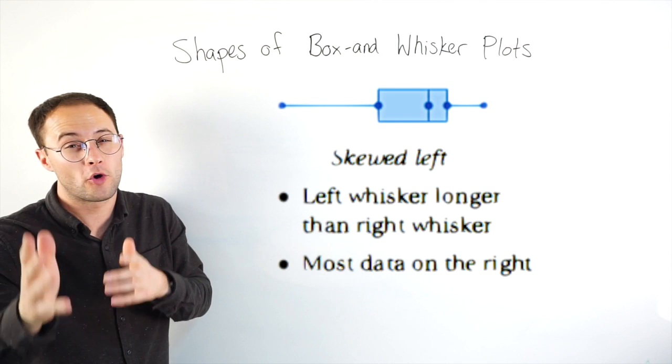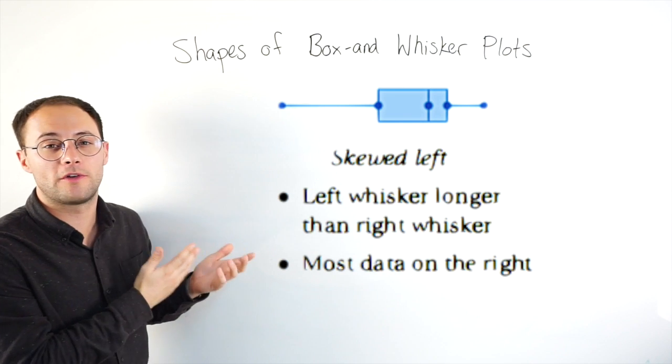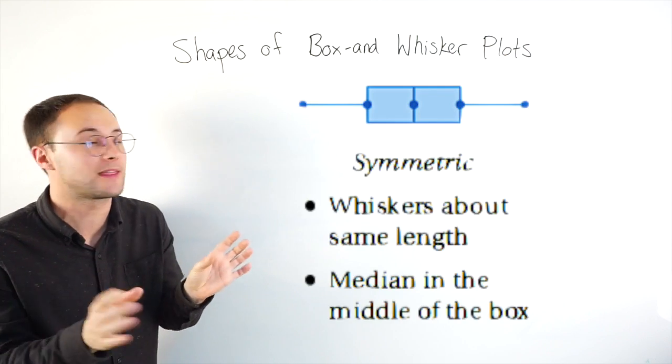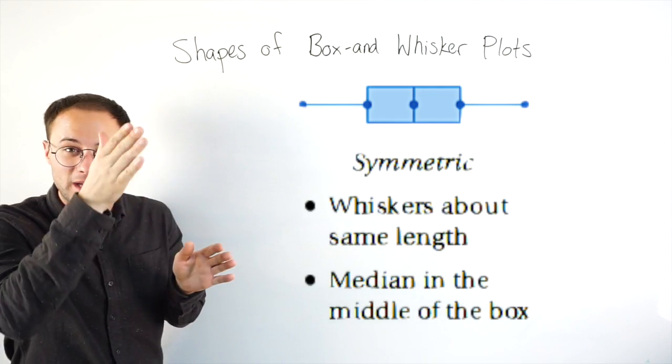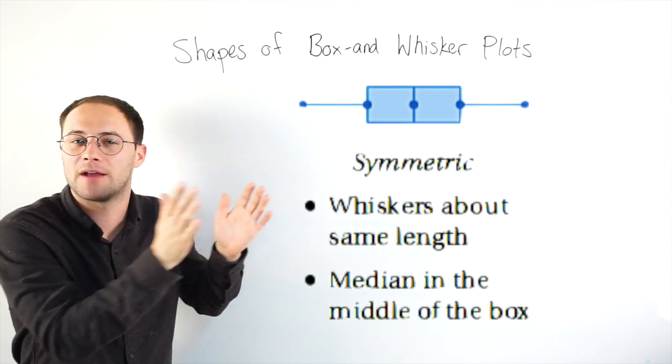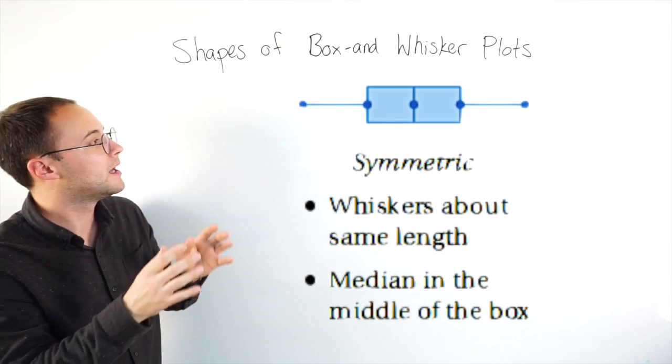It's the exact same thing as how we describe histograms, the shape of histograms. So if you've already seen that video, this should look very familiar. If the two whiskers are about the same length, and the box, the median is kind of right in the middle, the data is not more to one side or the other, we call that symmetric.